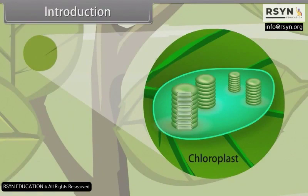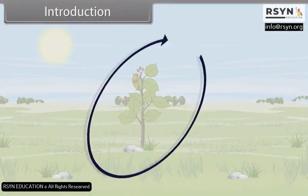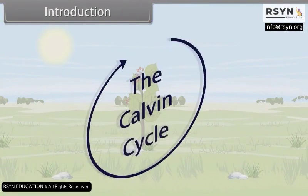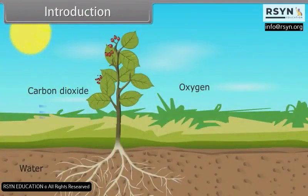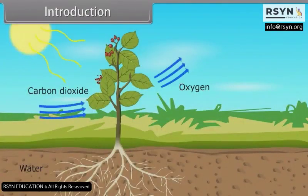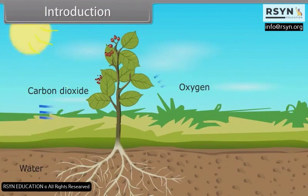There are two cycles through which photosynthesis takes place: the Calvin cycle and the C4 cycle. The rate of photosynthesis is affected by availability of light, carbon dioxide concentration, and other factors. Throughout this module, we will learn photosynthesis in higher plants.